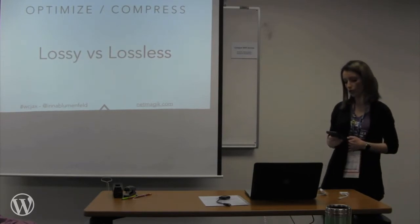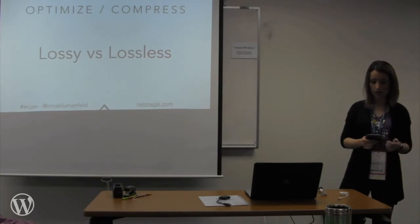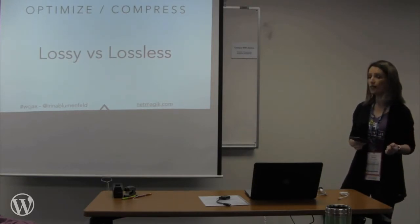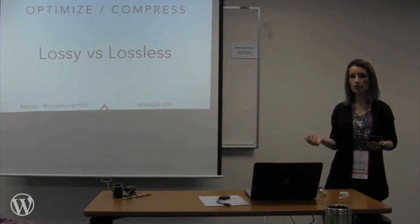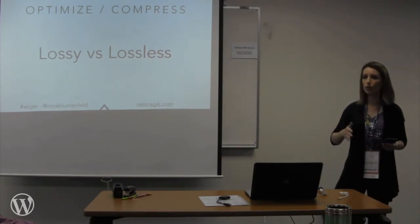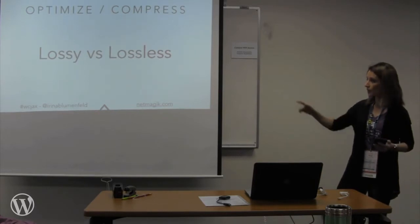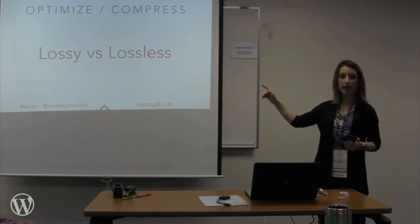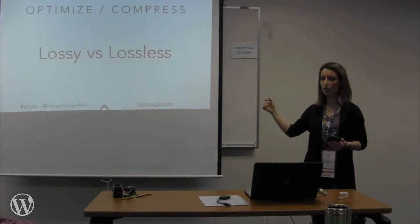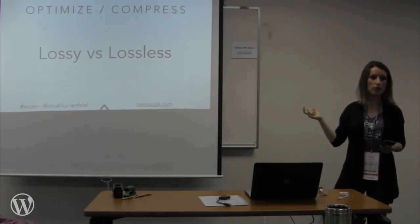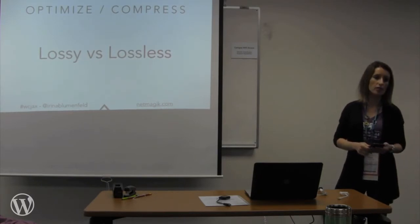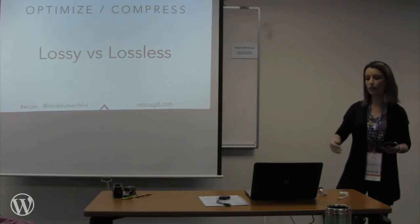The next thing you should do with your images is compress and optimize them. There are two types of compression: lossy and lossless. What compression does is remove image metadata — such as how large the image is, when it was created, image resolution — all those details take up space and you don't need to send them to the web. Lossless compression, as the name implies, loses less — instead of removing pixels, it just compresses them. If you have a photography site and need to preserve finer details, use lossless. For everything else, I recommend lossy because you get the most file size savings.